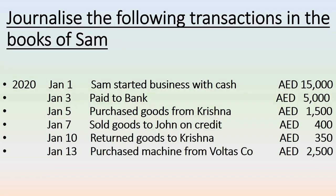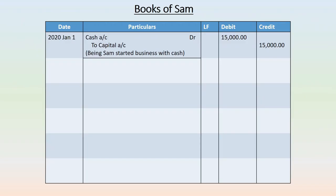First transaction: 2020 January 1st — Sam started business with cash 15,000 dirhams. For every transaction there will be two accounts: one to debit and the other to credit. First, you have to identify which accounts are coming in the transaction. In this transaction, the two accounts are cash account and capital account, because Sam is bringing the capital into the business in the form of cash.